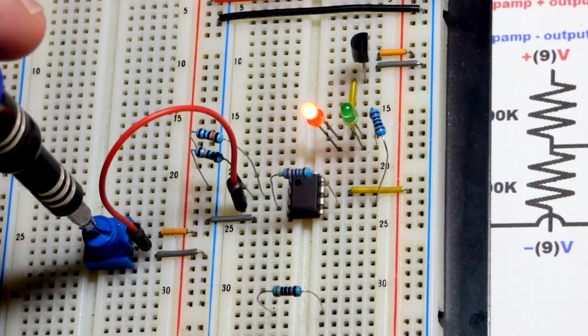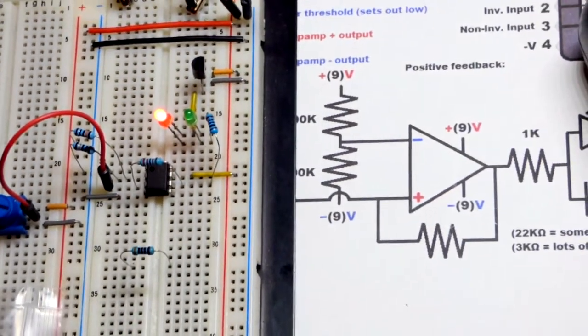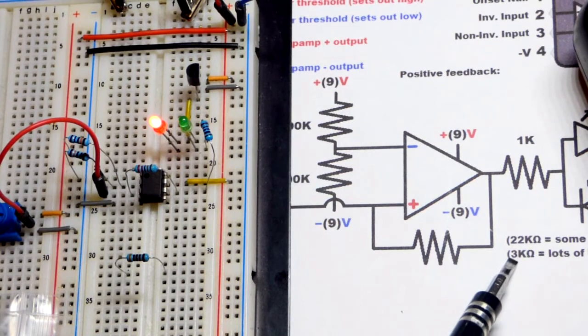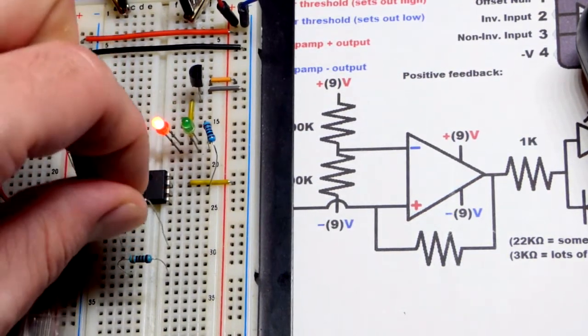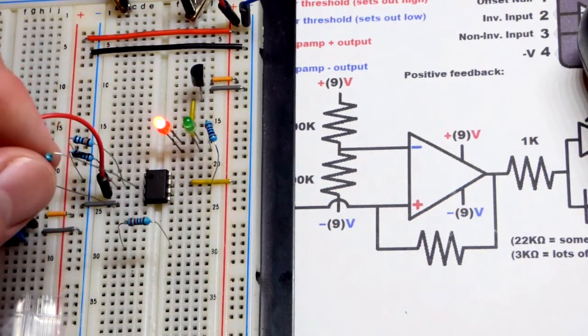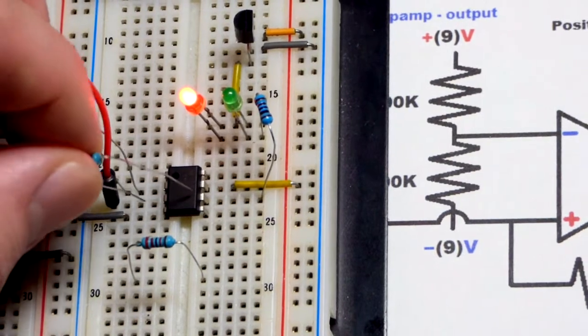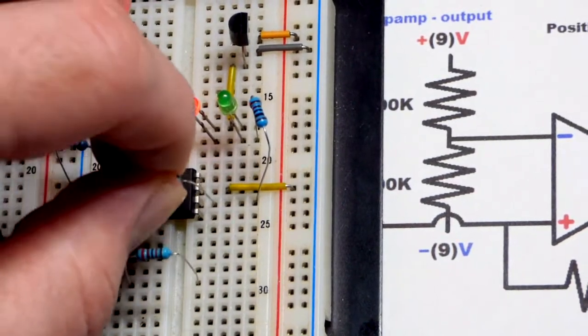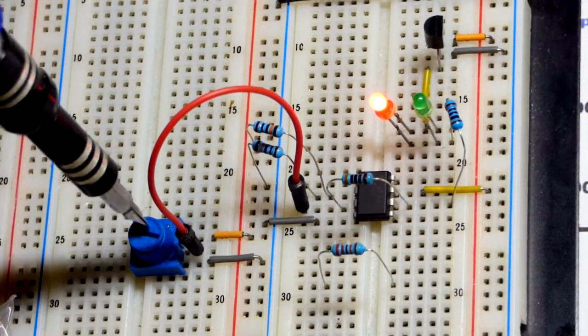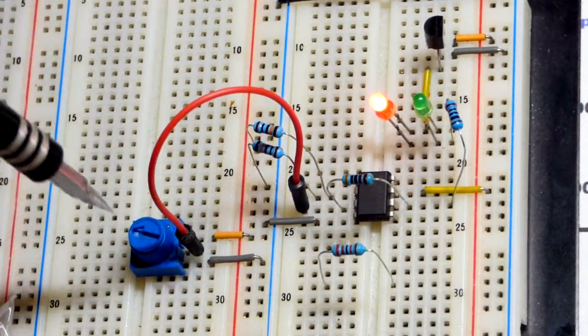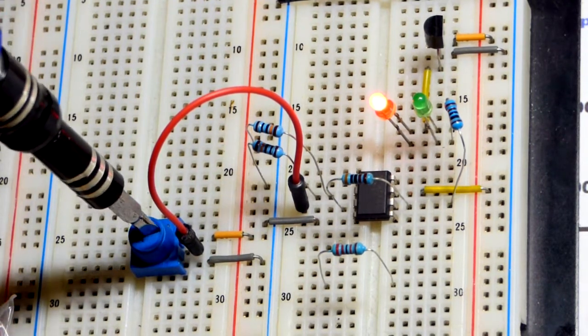We can go to a more extreme version with a 3 kiloohm resistor. I'm just going to pluck that out there. This is three kiloohms—I'll zoom in so you can see me plug it in where the non-inverting input is and the output right there.